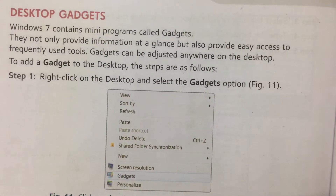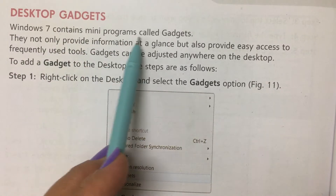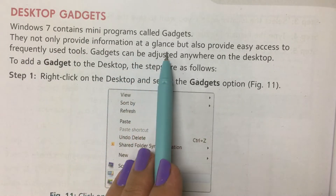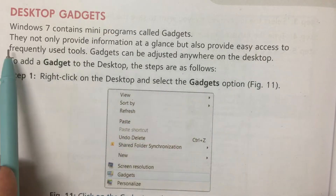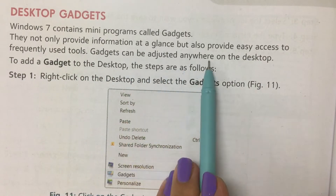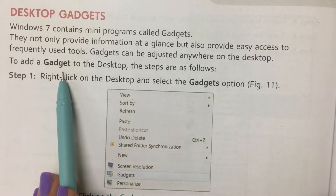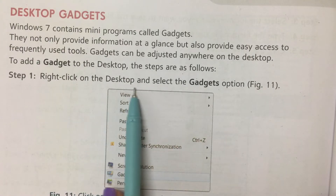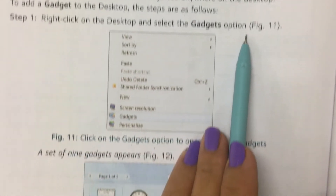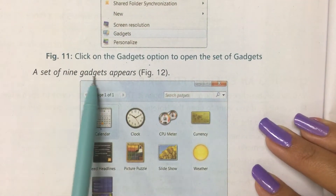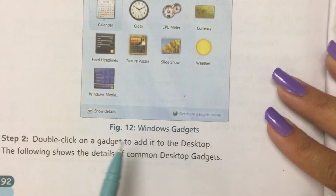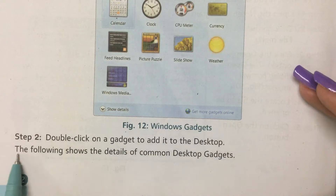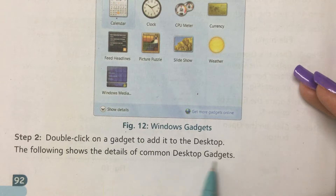Desktop Gadgets. Windows 7 contains many programs called Gadgets. They not only provide information at a glance, but also provide easy access to frequently used tools. Gadgets can be adjusted anywhere on the desktop. To add a gadget to the desktop: Step 1: Right click on the desktop and select the Gadgets option. A set of 9 gadgets appears. Step 2: Double click on the gadget to add it to the desktop.